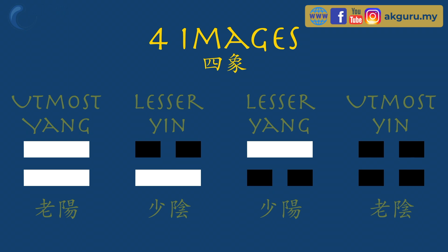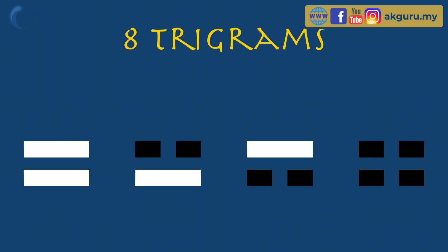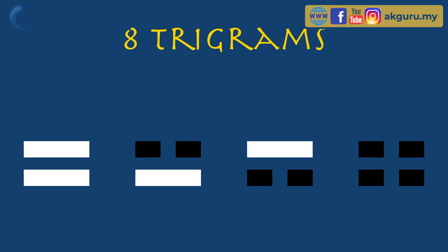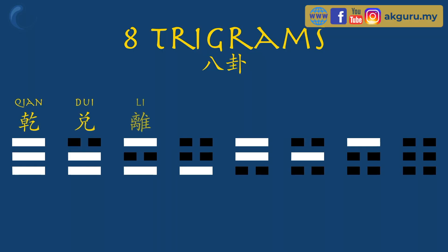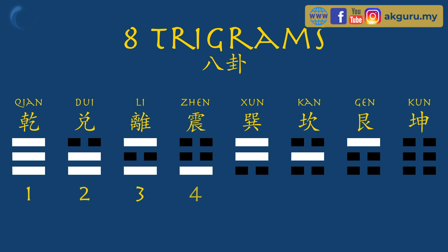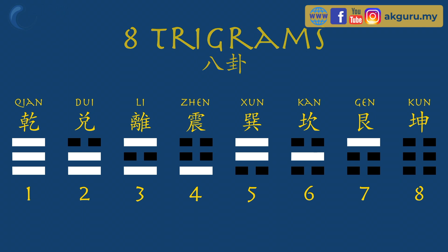This is the process that generates the four bigrams, known as the four images or Si Xiang. From these four bigrams, we add Yin and Yang on top of each respectively to generate the eight trigrams, known as Ba Gua. From Ba Gua, we can start to derive all the good and bad in the universe in a rough form — this is how Feng Shui started from Ba Gua as well. Ba Gua is the basis for auspicious and inauspicious matters. Ba Gua has a primordial number — the order of the trigram — starting from number one on the left and ascending to number eight.